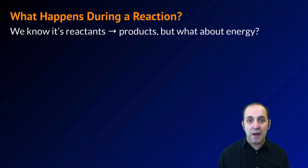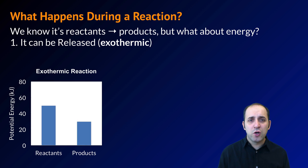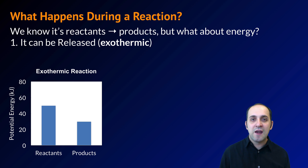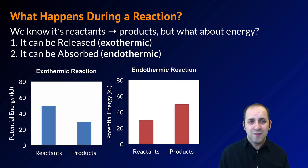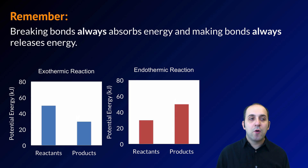During a reaction, reactants are converted into products, but what happens to the energy? Fundamentally, two things can happen. Energy can be released — that's an exothermic reaction — where the products have less energy because some energy was released. Or it can be absorbed, which is an endothermic reaction, where the products have more energy than the reactants because energy was absorbed. It's important to remember that we always need to put energy into bonds to break them, and we always release energy whenever we make bonds.